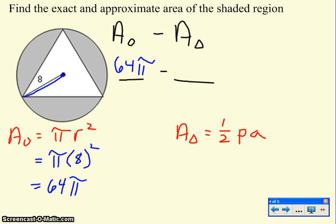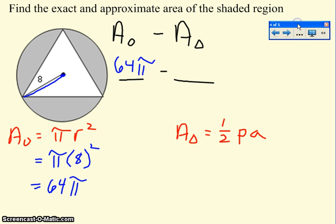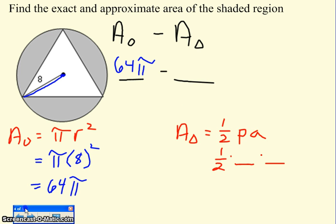Now I just have to concentrate on finding the area of my triangle using one-half perimeter times apothem. If I can figure out what my perimeter is and my apothem is, I will be all set. I do think I'm going to have to do a little bit of work to figure this out.